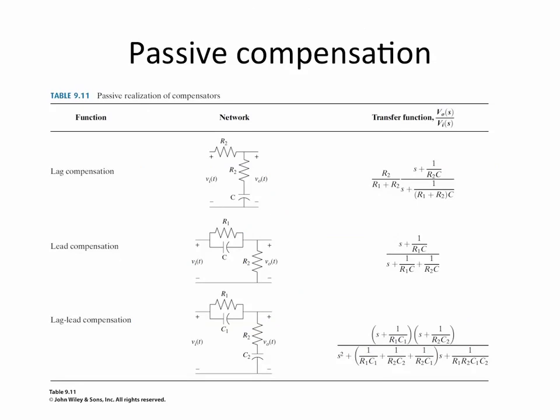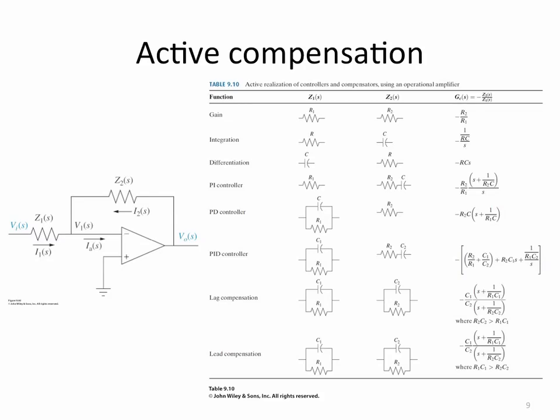In the previous lectures you looked at implementing compensators using networks of resistors and capacitors — lag compensators, lead compensators, lead-lag compensators. If you add an op-amp, you have a rich range of choices: PI controllers, PD controllers, PID controllers, and so on. You choose the performance characteristics you want, design the resistor and capacitor values, implement it, and away you go.